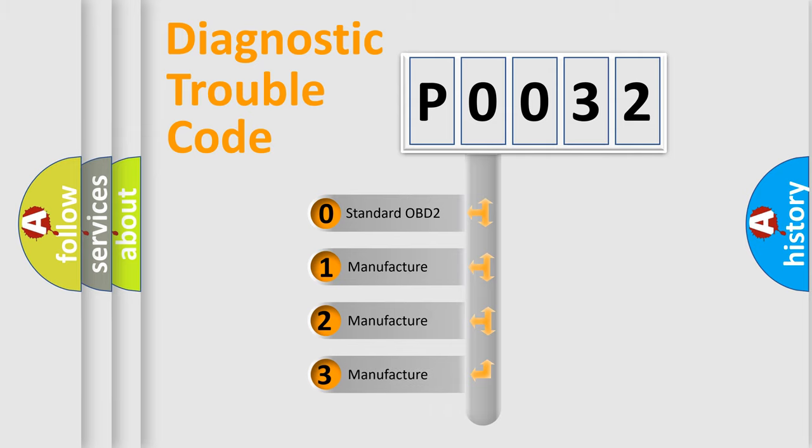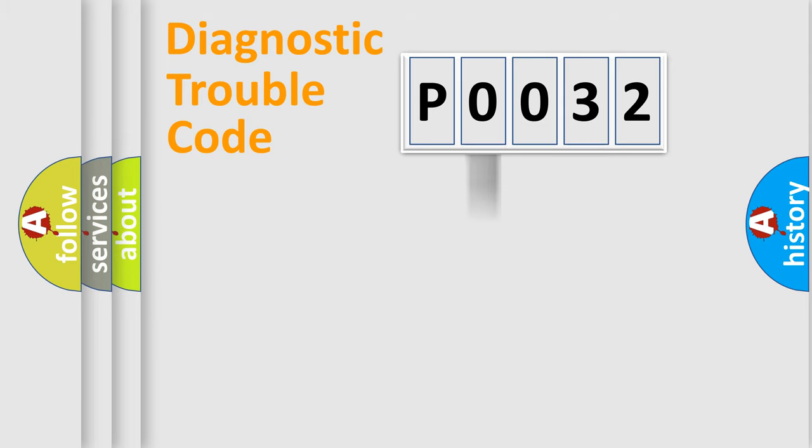If the second character is expressed as zero, it is a standardized error. In the case of numbers 1, 2, 3, it is a manufacturer-specific expression of the car error.